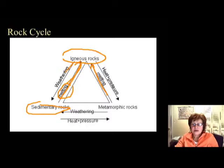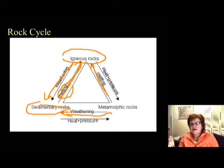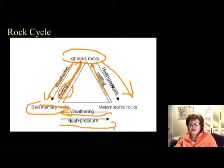Any time the arrow goes to the sedimentary rocks, it has to have weathering on it. Metamorphic rocks too will weather into sedimentary. And from igneous or sedimentary rocks, if you have high heat and pressure, they will actually metamorphose and become metamorphic rock. For metamorphic rocks, the keyword is heat and pressure, and from any kind of rocks, by heat and pressure, metamorphic rocks will form.